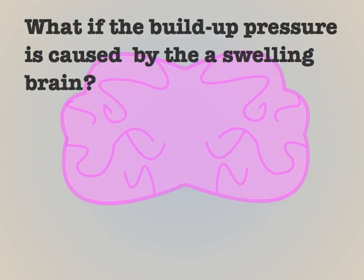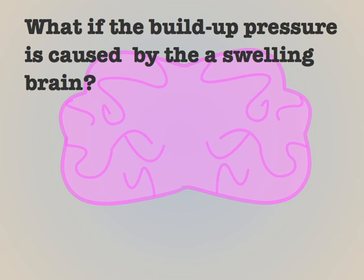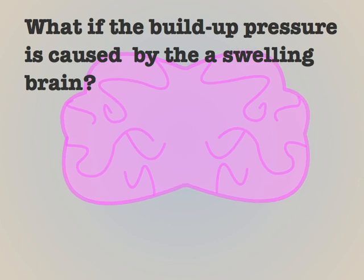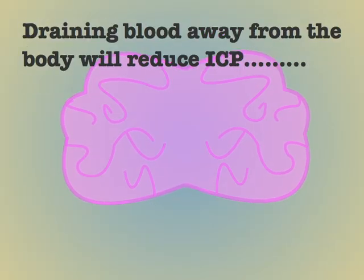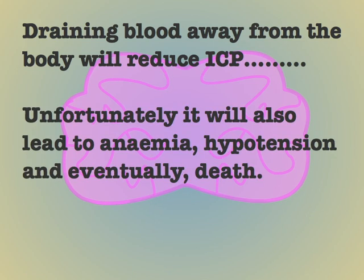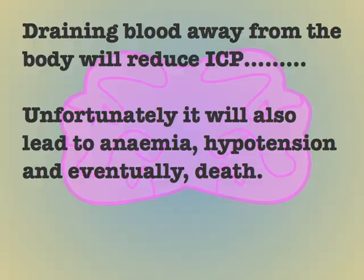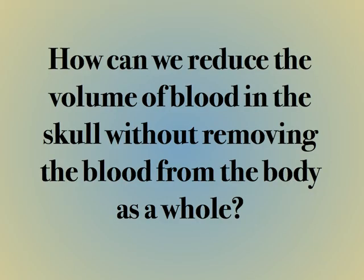But what if the cause of the increased pressure is a swollen brain? Reducing the volume of blood can still be an effective strategy, but we can't simply drain it away from the body. In the very short term this would reduce pressures, but the patient would quickly become anaemic leading to a whole host of new problems. So how can we reduce the volume of blood inside the skull without removing the blood from the body entirely?